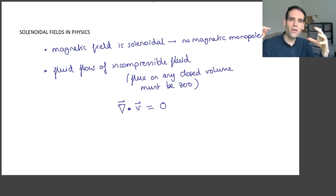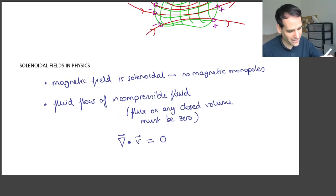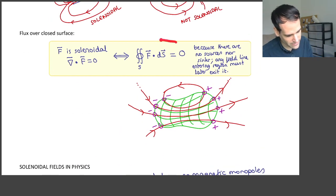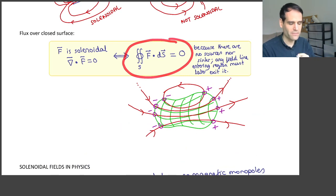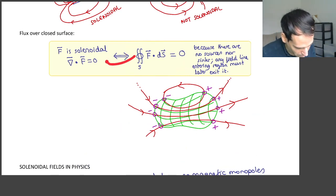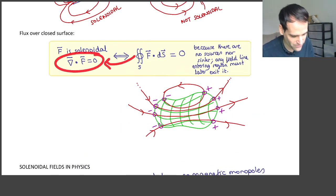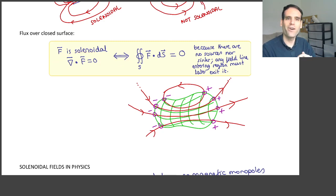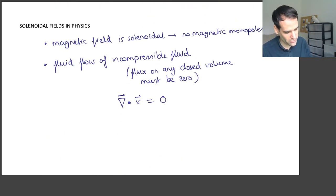And therefore if you have a volume, then the amount of water going in must be equal to the amount of water going out. And then we can make a mathematical argument saying that this translates to the flux being zero, and therefore this translates to the divergence of the field being zero. So this is a solenoidal field.